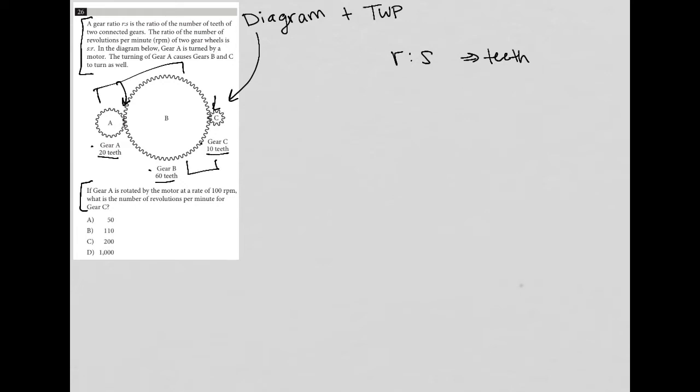Let's keep reading. It says the ratio of the number of revolutions per minute of two gears is S to R. So it looks like whatever R and S are, we just reverse the order of that, and that will give us the ratio for the RPM for those connected gears. In the diagram, gear A is turned by a motor. The turning of gear A causes gears B and C to turn as well. So gear A starts to turn, and then that makes the rest of these turn.